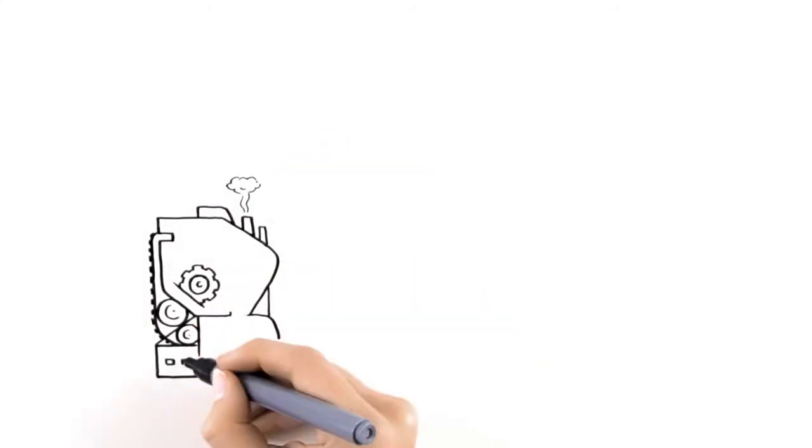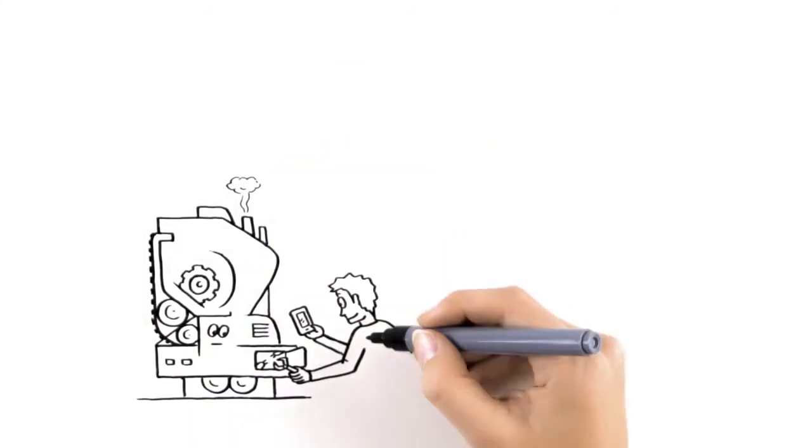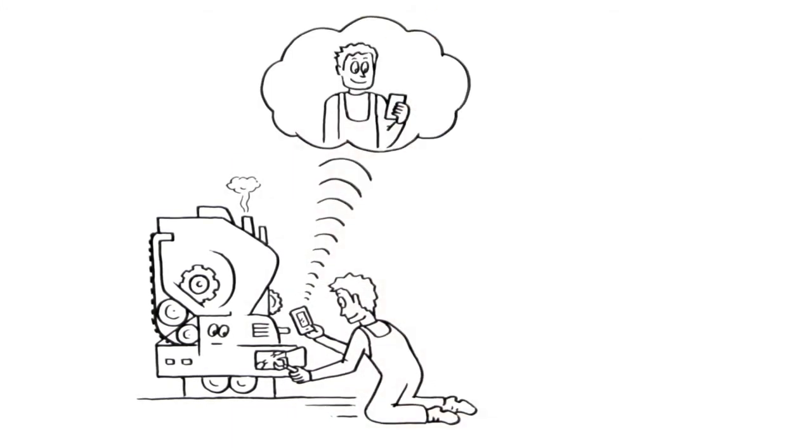In case he can't figure out my problem, he can always ask a colleague for advice by sending a message and attaching a picture of what's broken inside me. This increases first-time fix rates for both me and other machines.